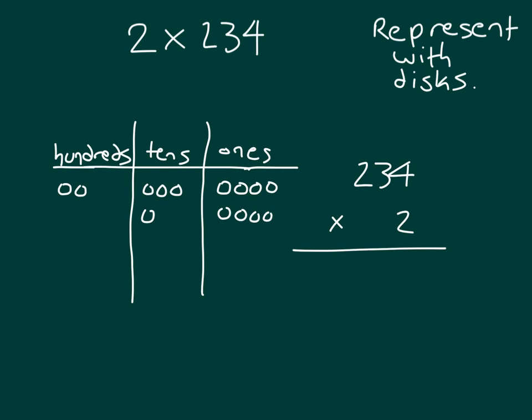In the tens place we have three more tens, and in the hundreds place we have two more hundreds. So that number there — we have eight ones, six tens, and four hundreds. So our answer there should be four hundred sixty-eight.